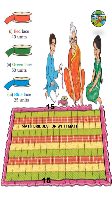Now count vertically how many boxes there are: 1, 2, 3, 4, 5, 6, 7, 8, 9, 10. So vertically there are 10 boxes on this side, and on the opposite side also it will be 10 boxes.